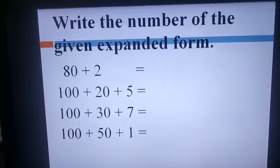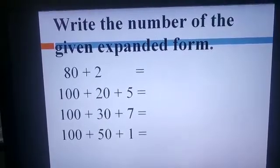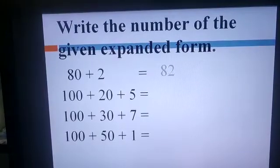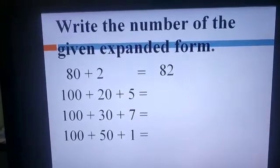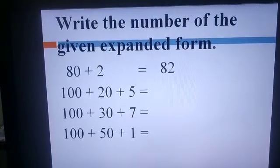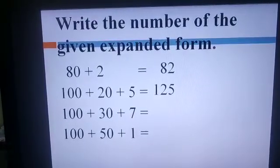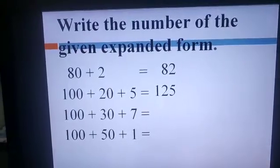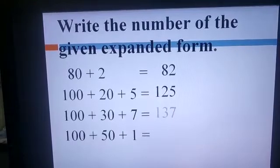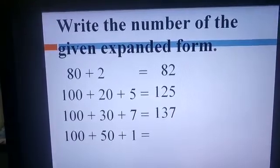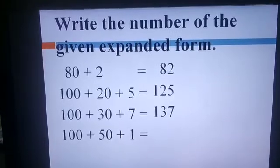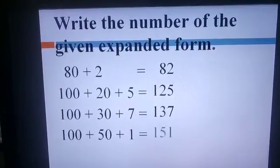write the number of the given expanded form. 80 plus 2 can be written in number 82. 100 plus 20 plus 5 can be written in number 125. 100 plus 30 plus 7 can be written 137. 100 plus 50 plus 1 can be written 151.